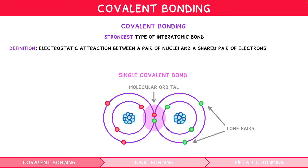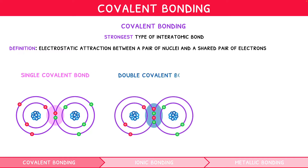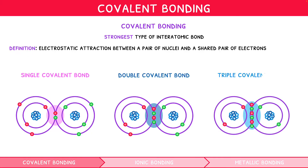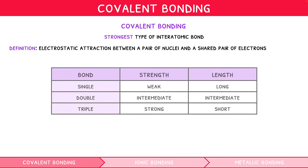Covalent bonds can be single, when one pair of electrons are being shared; double, where two pairs of electrons are being shared; or triple, where three pairs are being shared. We will go into more depth on the significance of lone pairs and multiple covalent bonds in the next video of this IB Chemistry Topic 4 series. For now, you can use the table below to remember the key differences this causes in their strength and length.